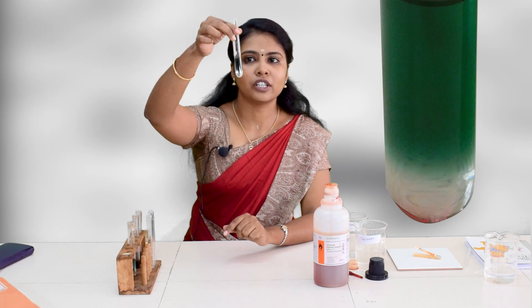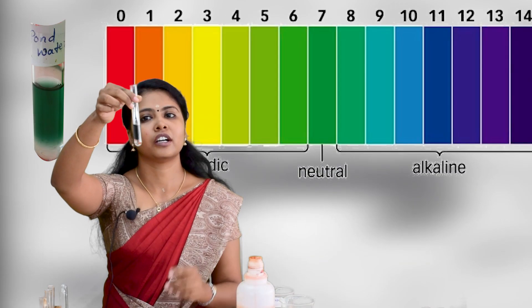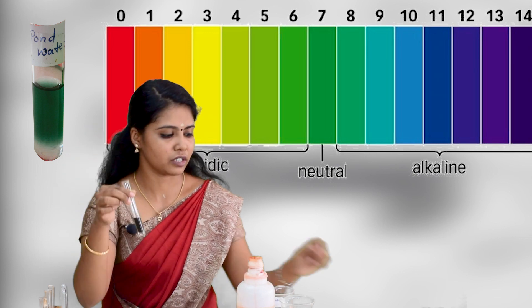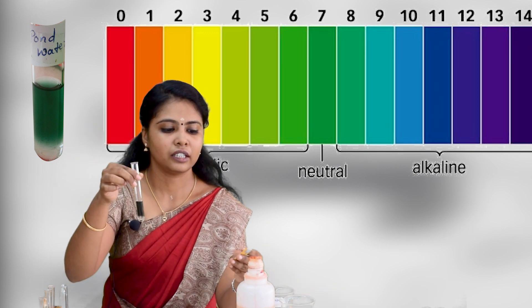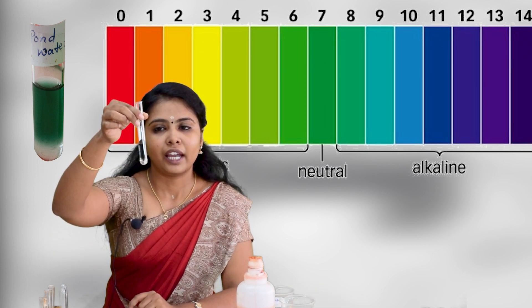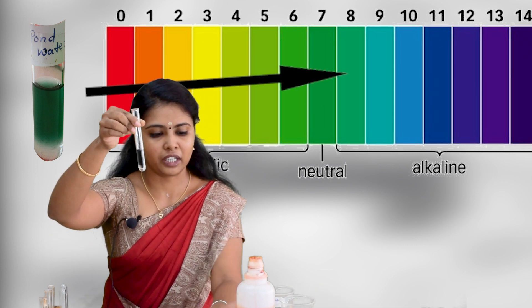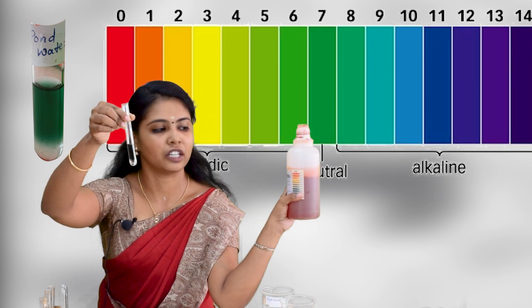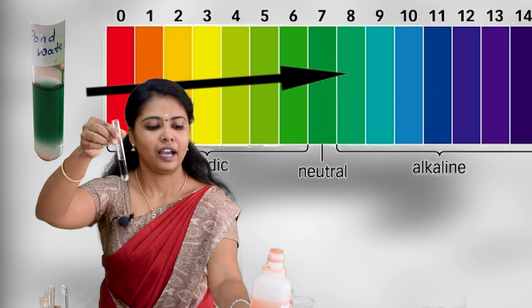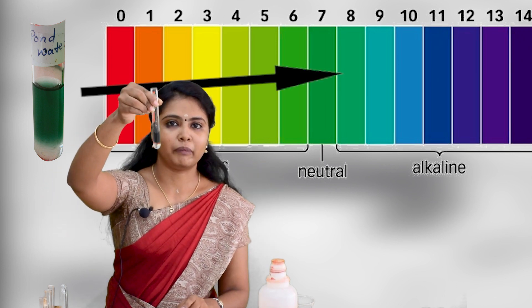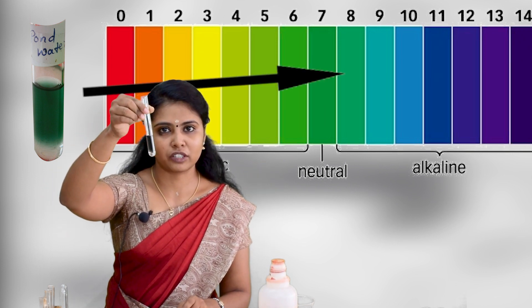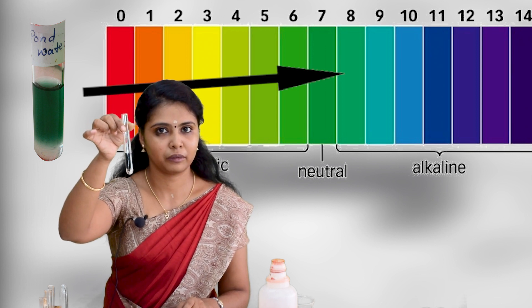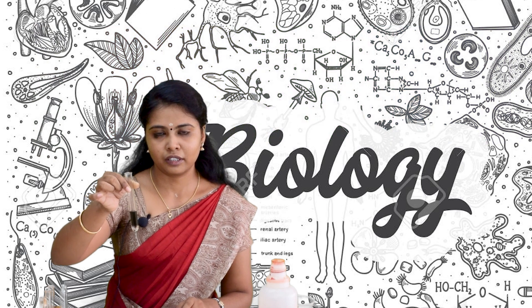Now, refer to the pH values and corresponding colour changes. You can see the green colour represents approximately pH 8 to 9. Just observe the pH colour change and the value of pH — this colour indicates the pH is 8 to 9.